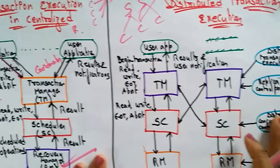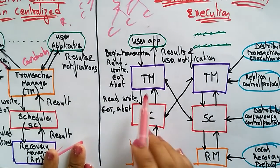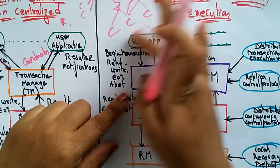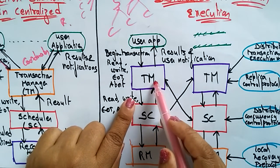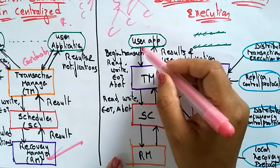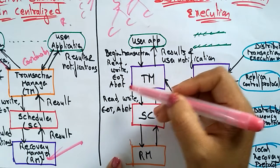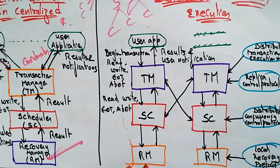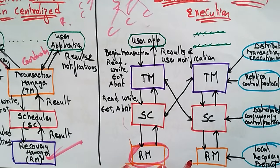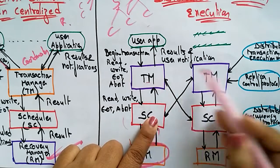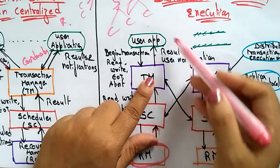In the distributed transaction execution, there is one user application used by different machines, accessing shared resources. Each machine has its own transaction manager, scheduler, and recovery manager. The user application begins the transaction and sends operations like read, write, end of transaction, or abort to the transaction manager, which passes them to the scheduler. The scheduler sends them to the recovery manager, which performs the action and returns the result.